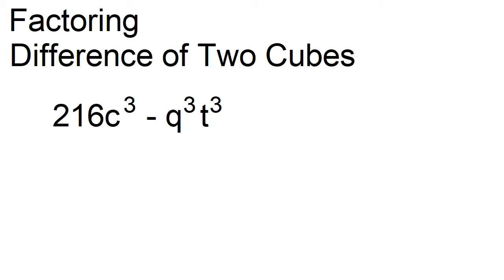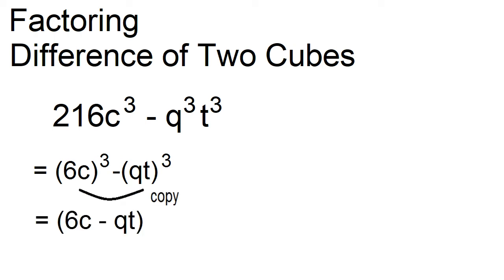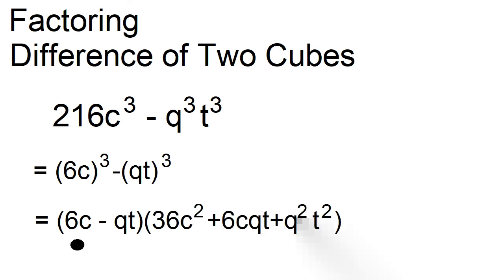Factor 216c cubed minus q cubed t cubed. This can be written as the cube of the quantity 6c minus the cube of the quantity qt. The factors are 6c minus qt and 36c squared plus 6cqt plus q squared t squared.